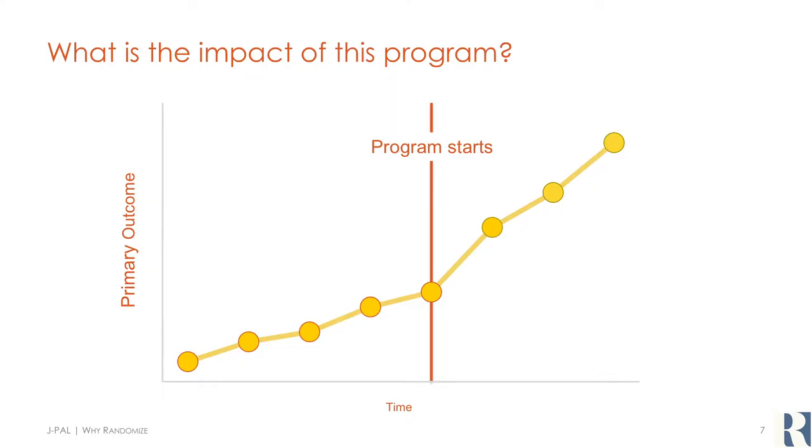I want to take a step back and think through what we actually mean when we say impact and how we think about measuring it. For example, you might have a program that provides information to farmers through cell phones. Imagine on the y-axis we're tracking yields over time. The program starts in the middle, and simply from this graph we can see the rise in yields over time for this population. However, there may be many factors affecting yields beyond our extension program at the same time — it could be just a good year for everyone, or another program happening simultaneously driving the change.